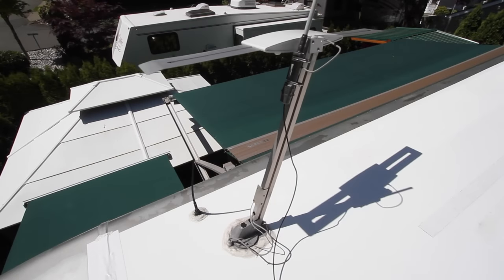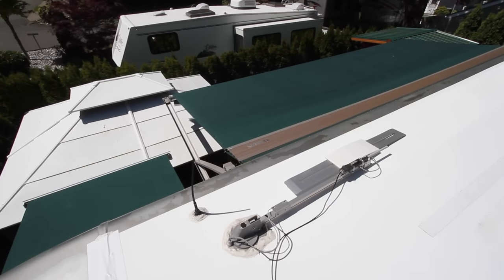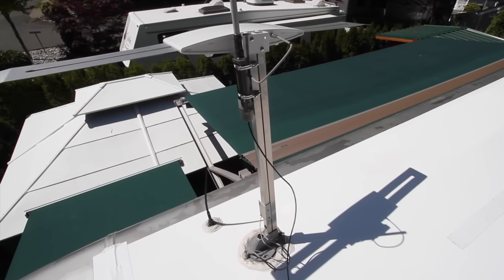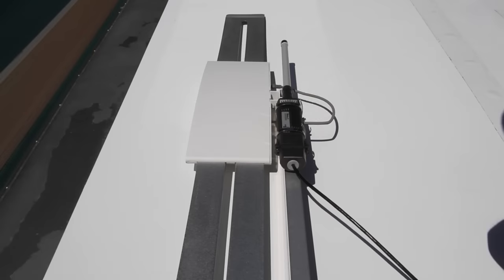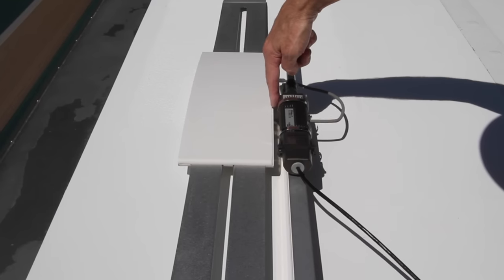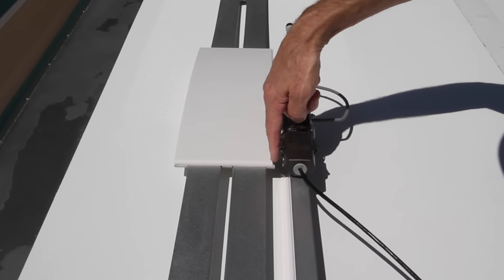Before going any further carefully stow and raise your antenna to make sure that nothing you just installed interferes with the mechanism operating normally. The main place to check is along the side of the batwing to be sure there's no conflict when the antenna is moving up or down.